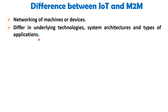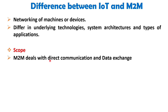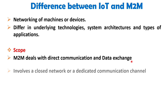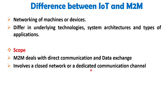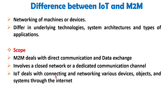Now let's discuss the scope of both technologies. M2M primarily focuses on direct communication and data exchange between two or more machines or devices. It typically involves a closed network or a dedicated communication channel such as a private server or a specific network infrastructure. On the other hand, IoT encompasses a broader concept of connecting and networking various devices, objects, and systems through the internet, enabling them to interact and share data with each other.